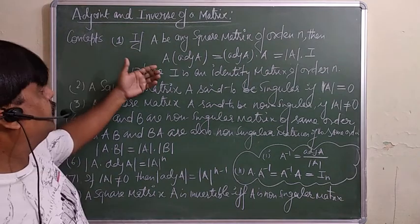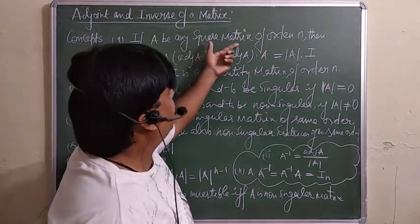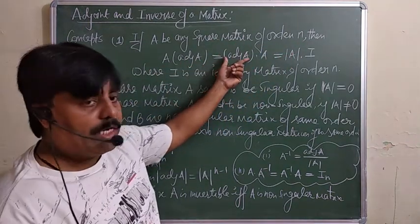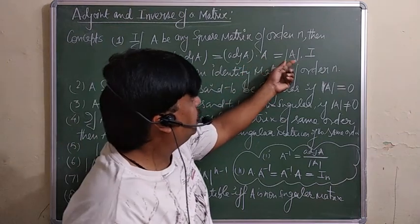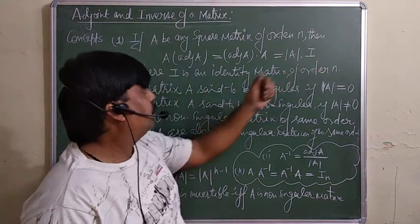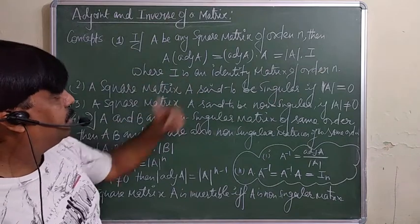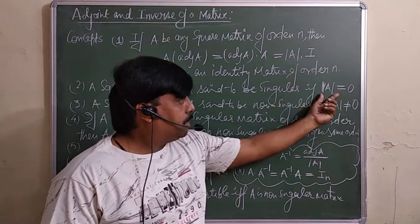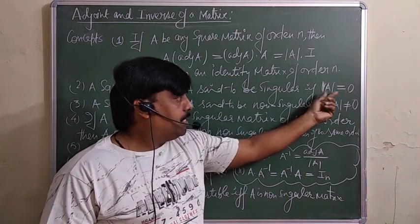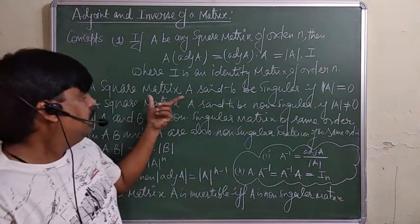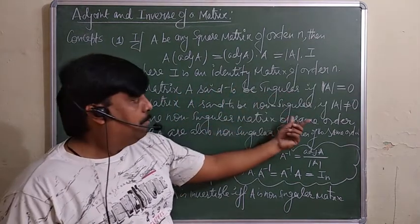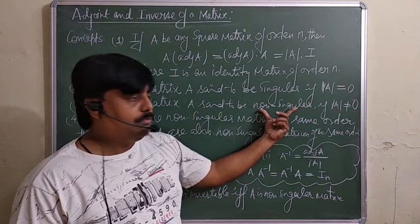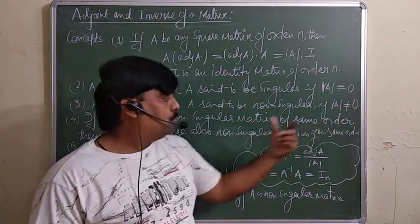A few more concepts: if A is any square matrix of order n, then A·adj(A) = adj(A)·A = |A|·I, where I is the identity matrix. A square matrix A is said to be singular if its determinant equals 0; if the determinant is not equal to 0, then the matrix is called non-singular.